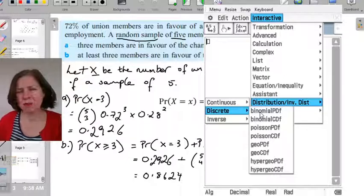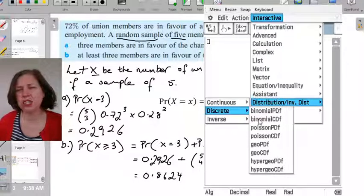Now P stands for the probability distribution function. The C in the CDF is cumulative, and we'll see in a minute what that does.